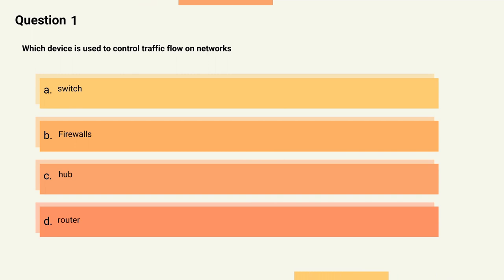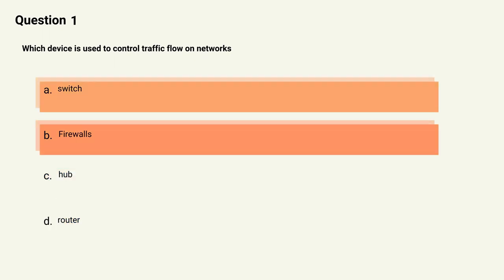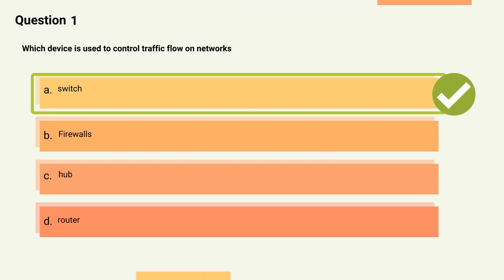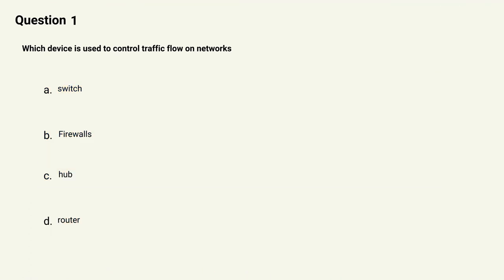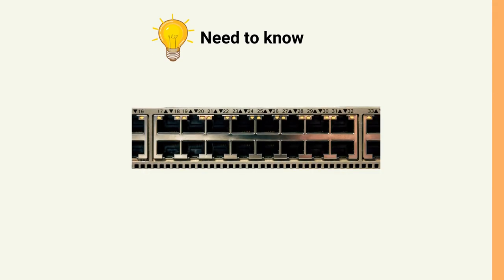Question 1: Which device is used to control traffic flow on networks? The correct answer is Option A, Switch. Explanation: Switches are wired devices that know the addresses of the devices connected to them and route traffic to that port or device, rather than retransmitting to all devices. They are smarter than hubs.